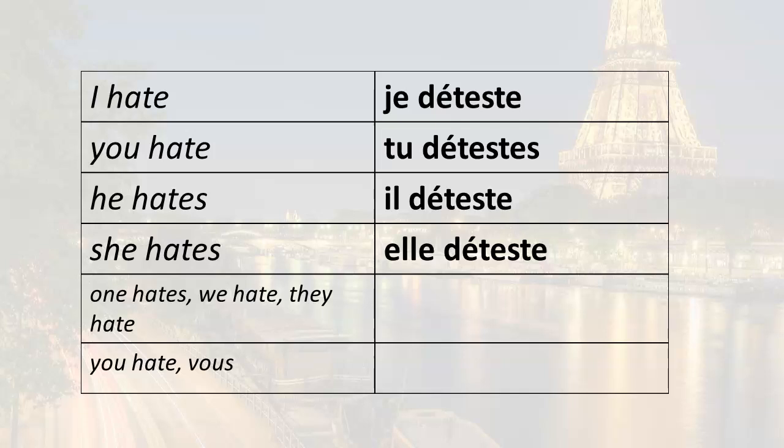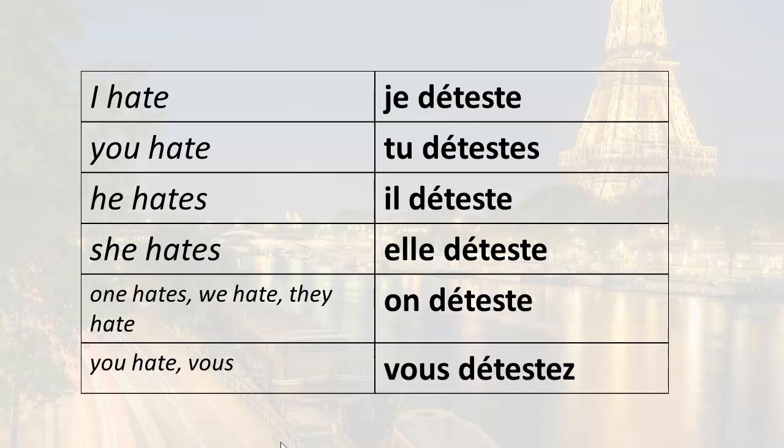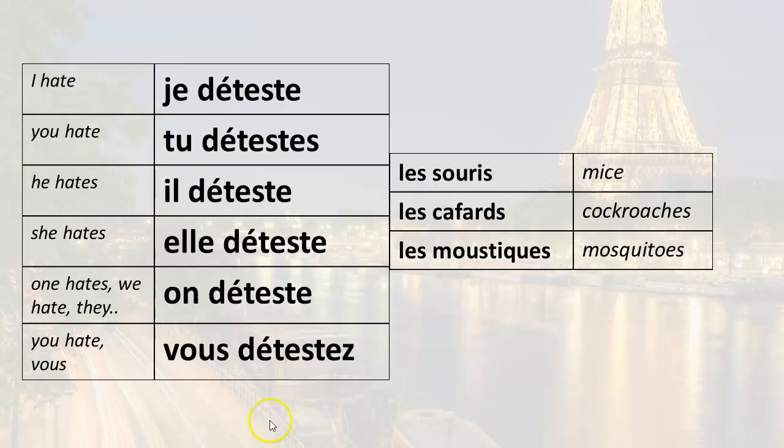One hates, we hate, they hate — on déteste. You hate — vous détestez. So now that we've conjugated the singular forms...